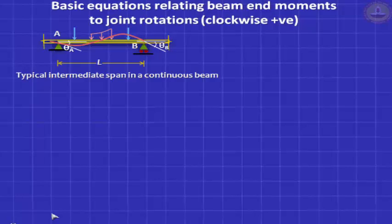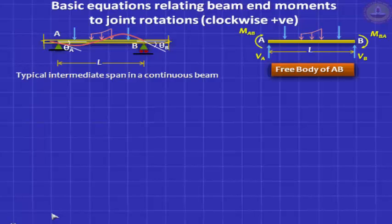There are no deflections at the joints, only unknown rotations. We take the free body of the beam, remove the supports, and find that at the two ends we have two unknown moments MAB and MBA. We invoke the clockwise positive convention — both are shown clockwise positive, though we know intuitively it is going to be hogging, meaning MAB will actually be anti-clockwise. Once you know MAB and MBA, you can find the vertical reactions and shear forces. So our only unknowns are MAB and MBA.